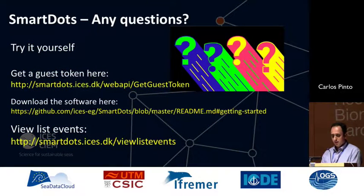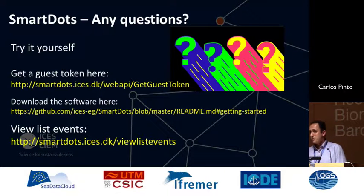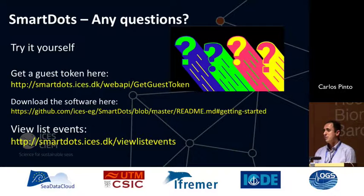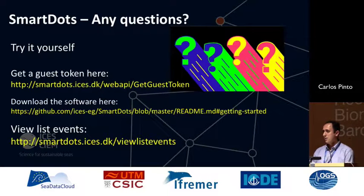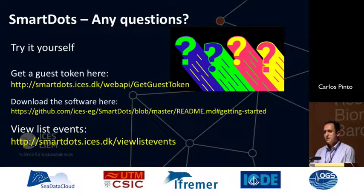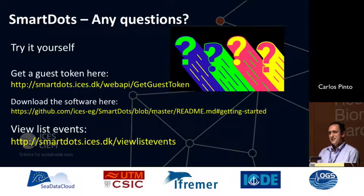I hope I have been clear. You can try it, by the way — we just implemented guest tokens before yesterday. So if an event is public, anyone can download the software, download a guest key, and go and see the public events. You can try to annotate if you are an age reader, or want to be one. Thanks. Any questions?